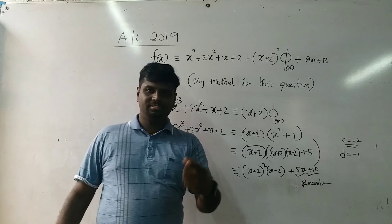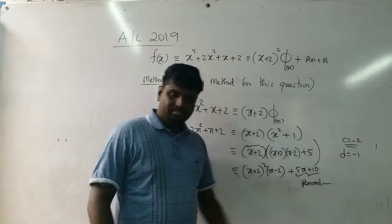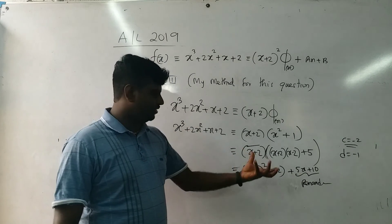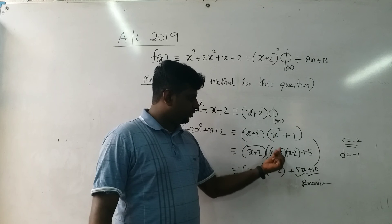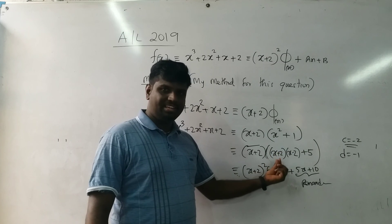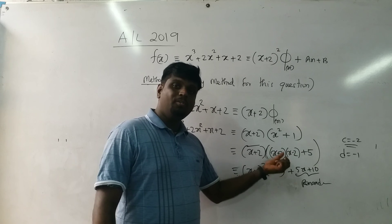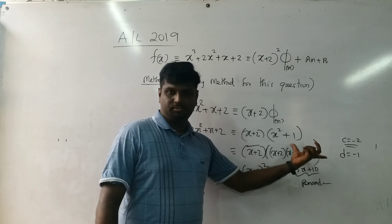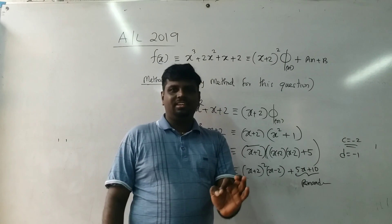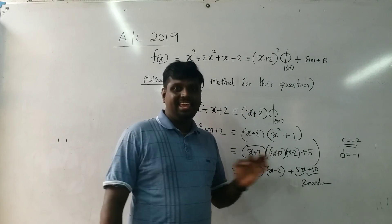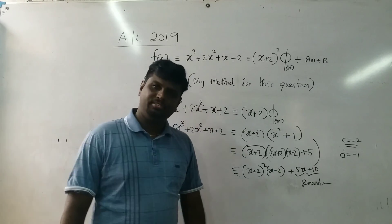The key trick is to write x² in the form (x+2)(x−2) rather than expanding (x+2)² minus 4, so you avoid having a standalone x term. Method 3 is the most elegant approach. The remainder is 5x + 10.